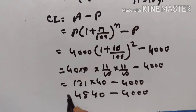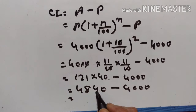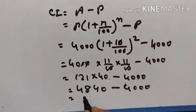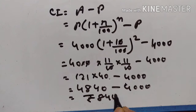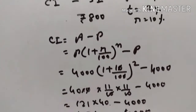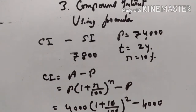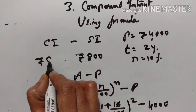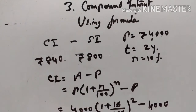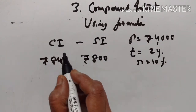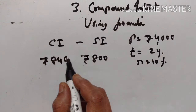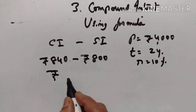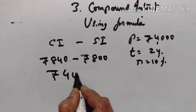So, compound interest is equal to 4840 minus 4000 is equal to rupees 840. The difference between simple interest and compound interest is equal to rupees 840 minus 800, which is equal to rupees 40.